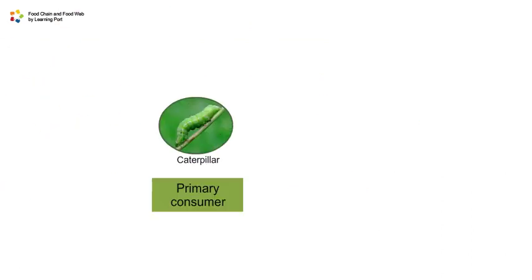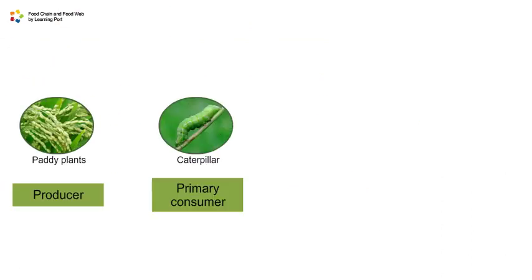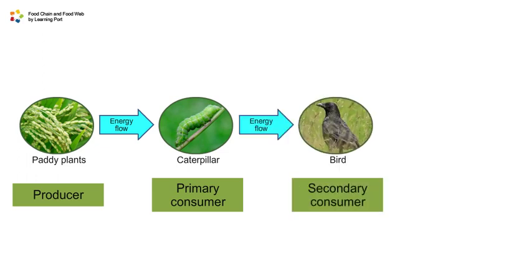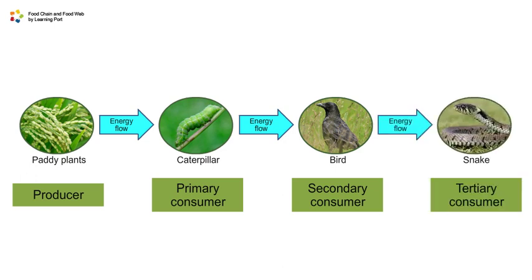When a primary consumer feeds on a producer — plants — some of the energy stored in the plants is passed on to the primary consumer. The primary consumer later passes its energy to a secondary consumer, which later passes it to a tertiary consumer.